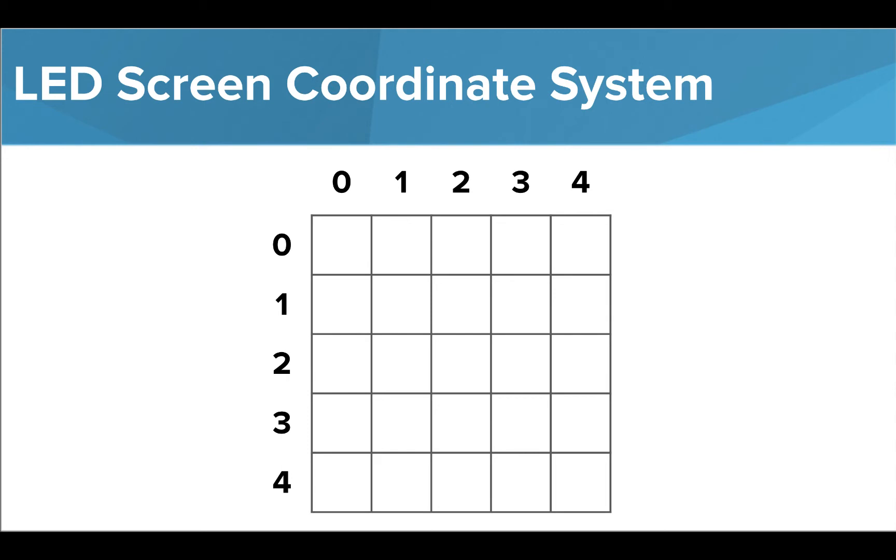We explored the LED coordinate system on our microbit devices and learned that each column and row is numbered from 0 to 4.